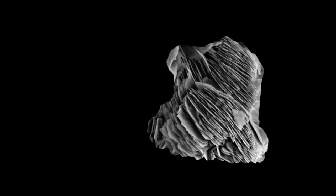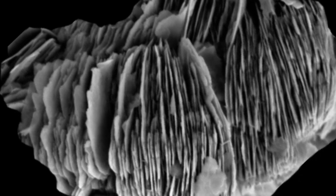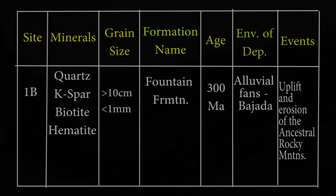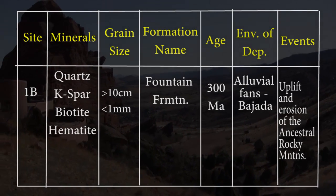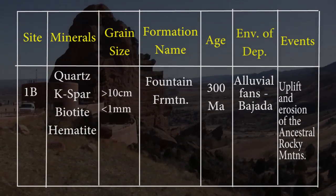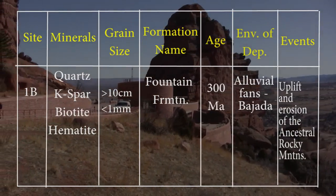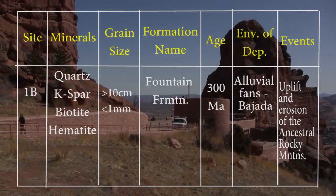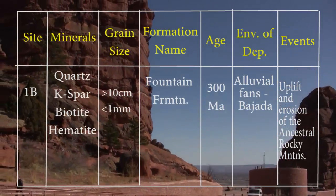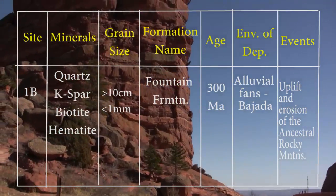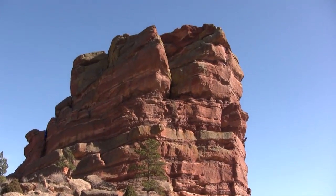Potassium feldspar doesn't last long in transport at the surface because it chemically weathers to clays in a geologically short time. The age of the Fountain Formation is 300 million years at its base and up to about 290 million years at the top. So this area was in an alluvial fan or Bajada depositional world for 10 million years. The event we witness with this formation is the uplift and erosion of the ancestral Rocky Mountains. And with that, we feel we have a better appreciation of this site, but before we can leave we must take a strike and dip.